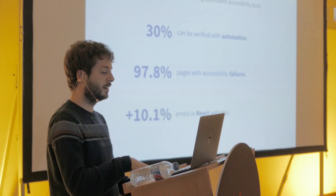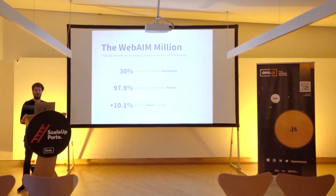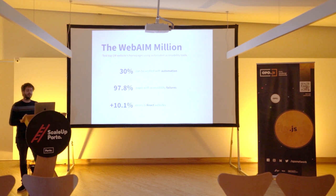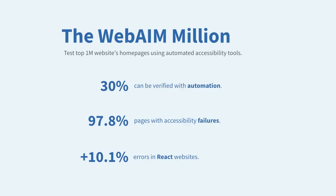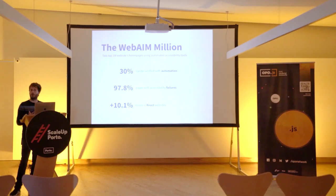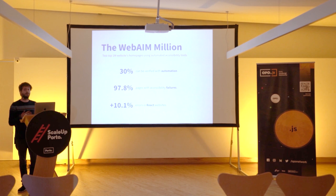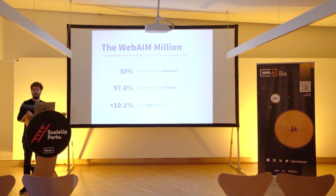One reason I wanted to discuss this at a JavaScript meetup is that they also broke down the results by framework and language. This is an example for React, but honestly all frameworks had on average way more errors than websites that just used plain HTML. People focused on JavaScript maybe don't know a lot about accessibility — which is okay, since 98% of people don't — but I wanted to share tips on how to change these numbers.